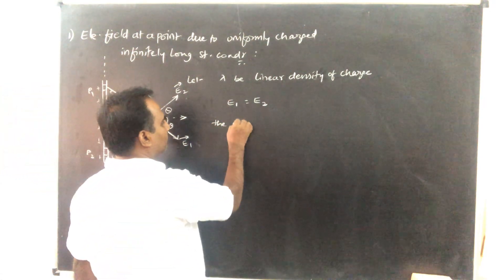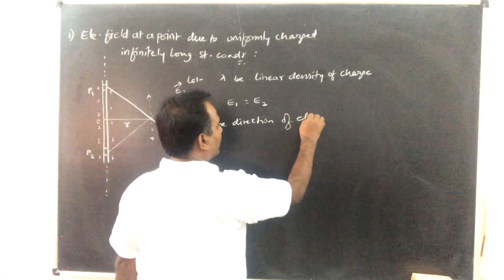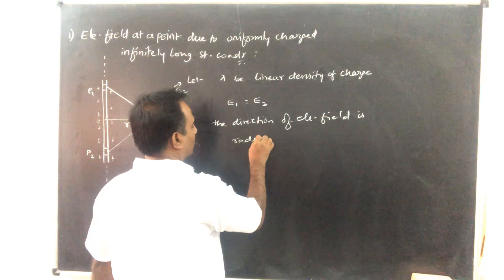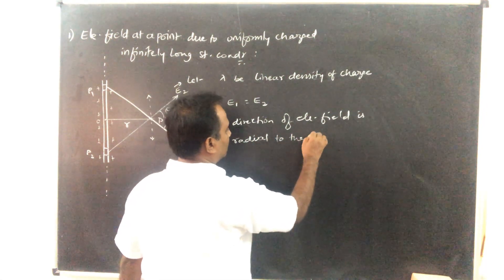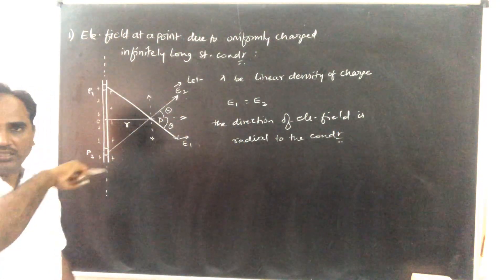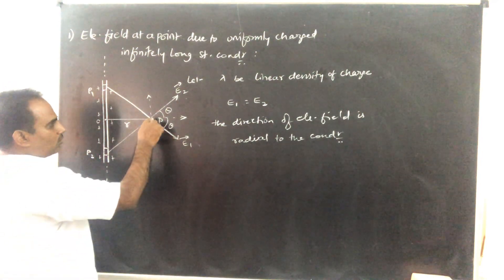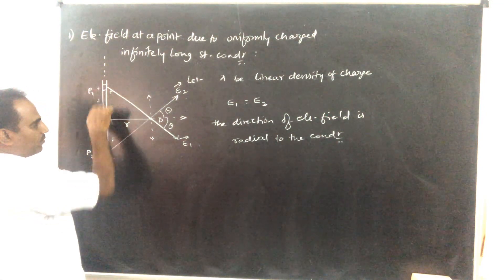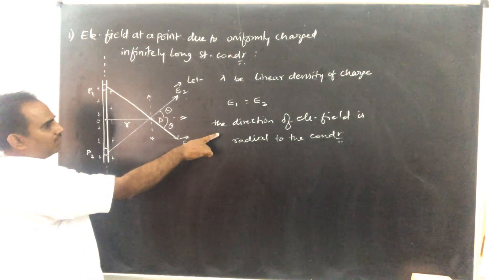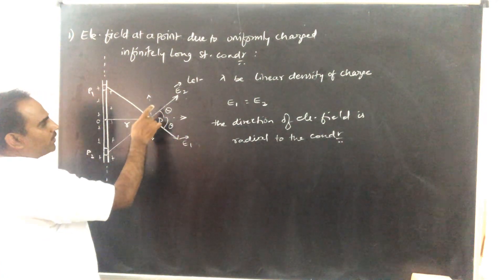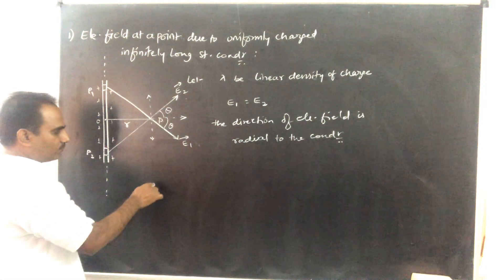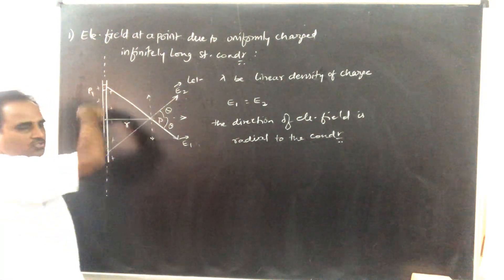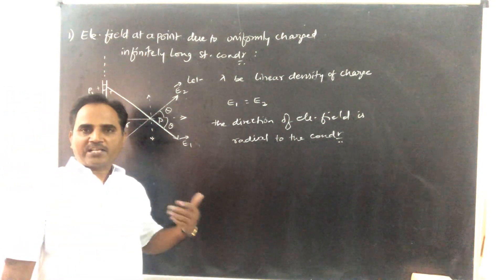The direction of electric field is radial to the conductor — that means along the radius of this straight conductor. At all points distant R from this straight conductor, the direction of electric field will be away from the conductor, and also its magnitude must be the same. So the magnitude of E is the same at all these points, and the direction of E is away from this straight conductor.